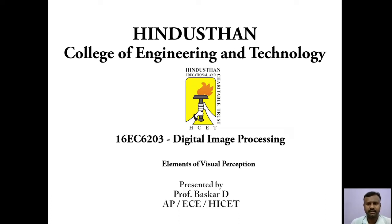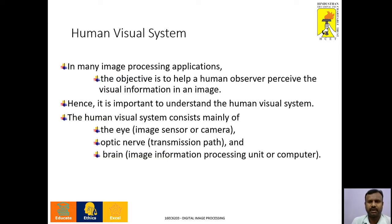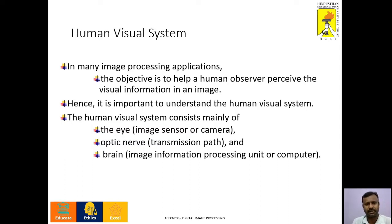Hello everyone, I am Vaskar, Assistant Professor of Department of ECE, ISET. In this video, we are going to discuss the elements of visual perception in the subject digital image processing. The contents are the structure of human eye and image formation in the human eye. The basic objective of image processing application is to help human observers perceive information from visual information or an image, so it is important to understand the basic functionality and structure of our human eye.